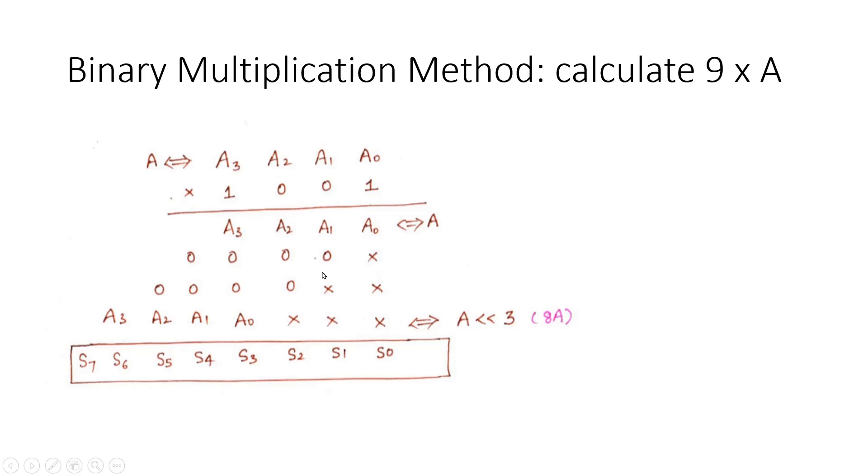Now how to get the final answer, final multiplication? We need to add all these four numbers. If you see them very carefully, this is the number A and this is three bit shifted version of the number A, that is nothing but 8A. So if we add 8A with A, we will get our final answer, that is 9A.